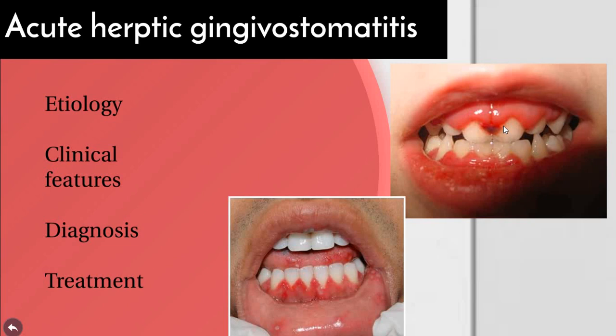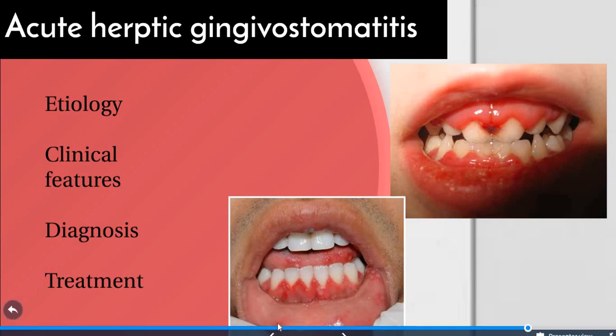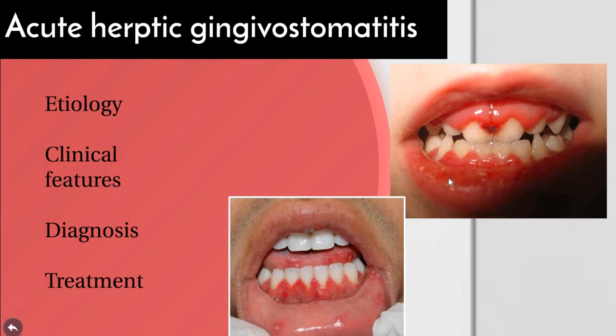The initial stage is characterized by discrete spherical gray vesicles which may appear on the gingiva, labial and buccal mucosa, soft palate, pharynx, sublingual mucosa, and tongue. After 24 hours, these vesicles rupture and form painful small ulcers that are red, with elevated hollow-like margins and a depressed yellowish or grayish-white central portion. These may occur as a cluster or may be widely spread.